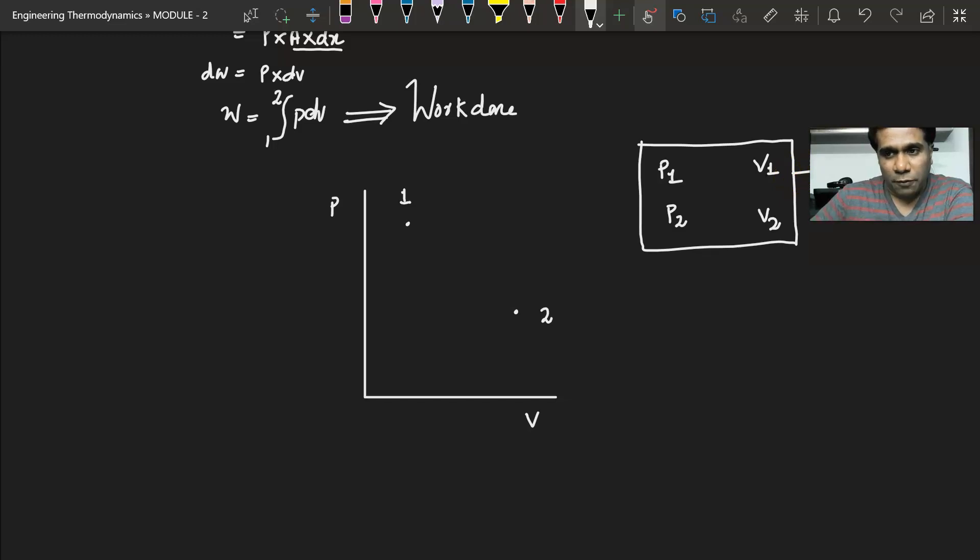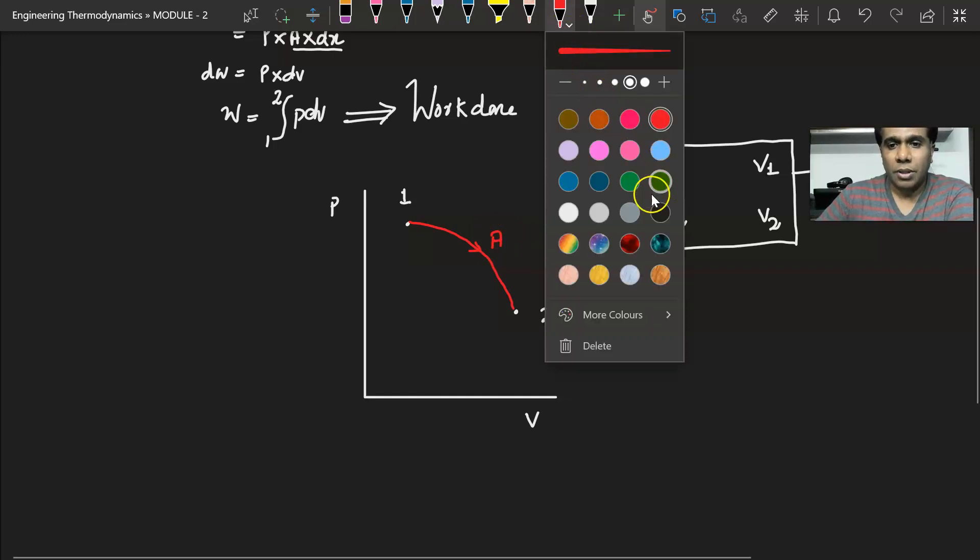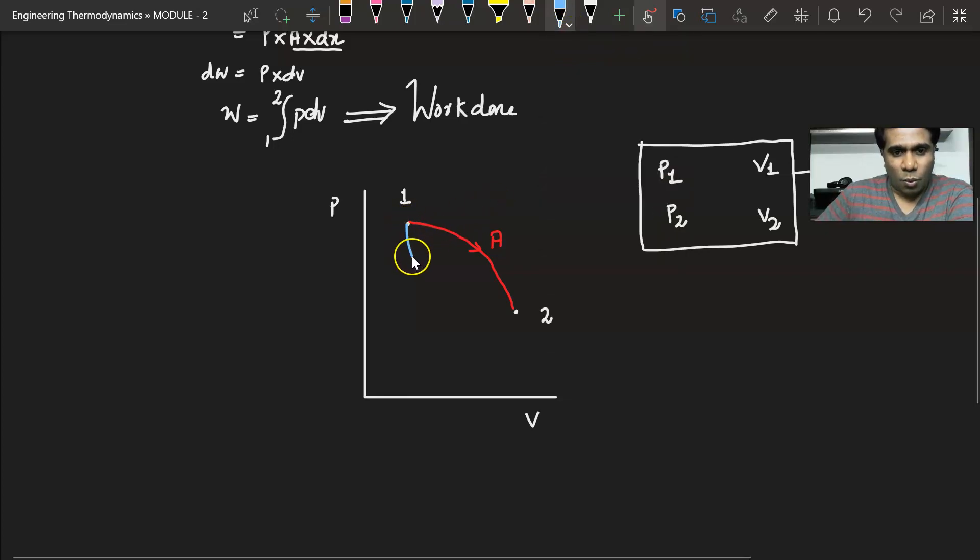Because the point functions or the properties will only depend on the end states, not the path. Now I am taking a path 1 to 2 like this, say this is the path which is taken by following 1 to 2 and the name is given as A. Now I am taking another path 1 to 2 like this, say this is path B.